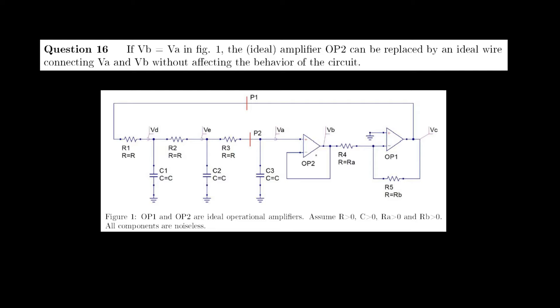The unity gain buffer between the frequency-selective network and the inverting amplifier isolates the impedance levels between these nodes and ensures that the Barkhausen criterion is satisfied. Therefore, the statement above is false.